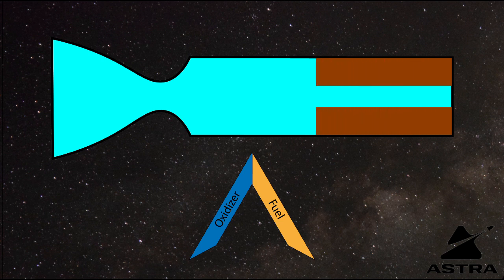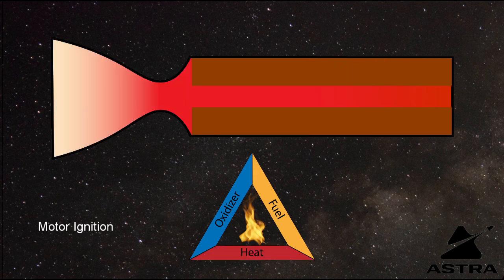It can then be ignited by adding heat. Now we have all three components of the combustion triangle. We have fuel and oxidizer in their solid form, and we have now the heat.